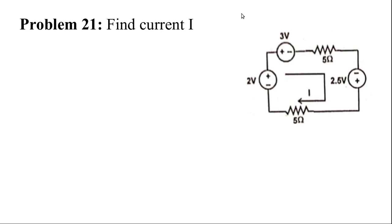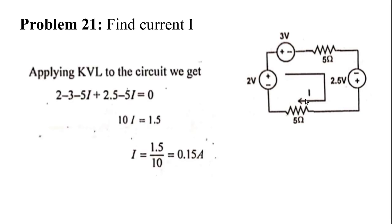We are seeing the continuation of last session. This is problem number 21. This is a given circuit — you have to find out the current in this circuit. There are three voltage sources and two resistors. You have to find out what is the current. It is very simple — you have to apply KVL.